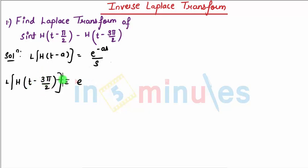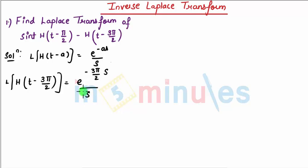So with a = 3π/2, the Laplace of h(t - 3π/2) is e^(-(3π/2)s) divided by s. That gives us the Laplace of h(t - 3π/2).